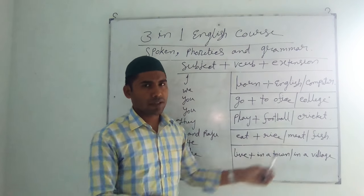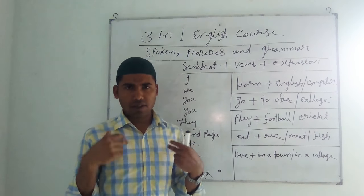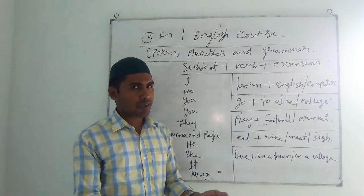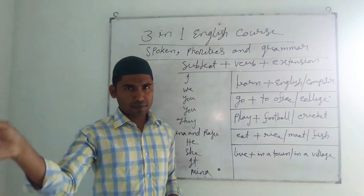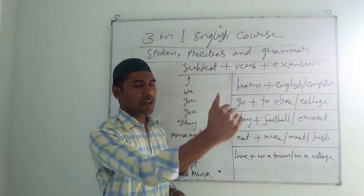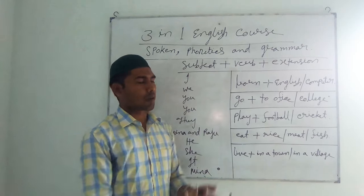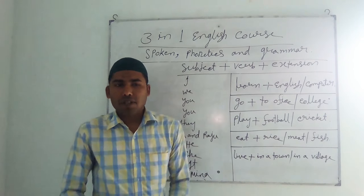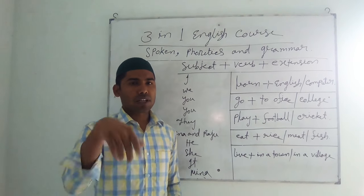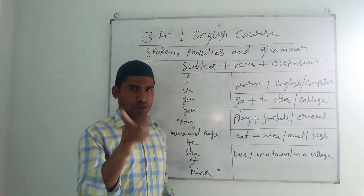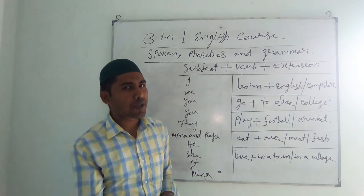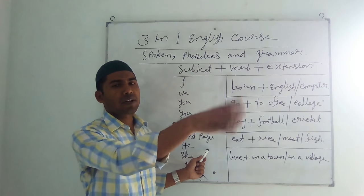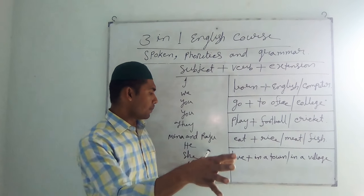You can practice with meat. I eat meat. We eat meat. He eats meat. Meena eats meat. Again with fish: I eat fish. We eat fish. You eat fish. Meena and Raju eat fish.